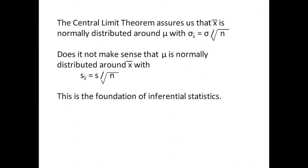Does it not make sense to you that if x-bar is normally distributed around mu that mu would be normally distributed around x-bar? And if mu is normally distributed around x-bar, then we need to notice that instead of using sigma, we will use s. So mu is normally distributed around x-bar with s of x-bar equal to s divided by the square root of n. This is the foundation of inferential statistics.